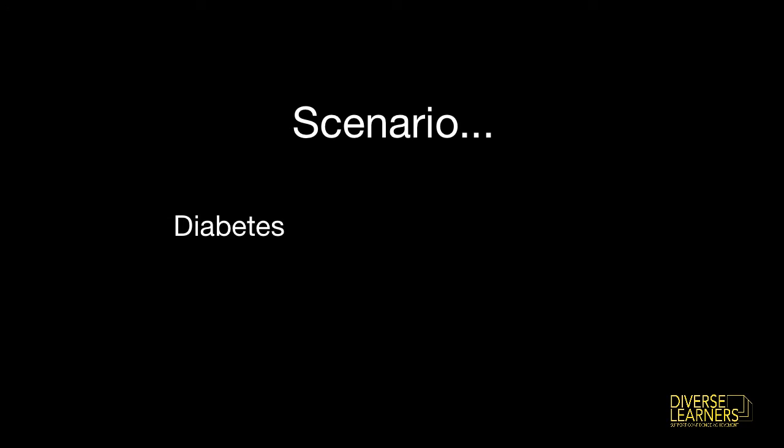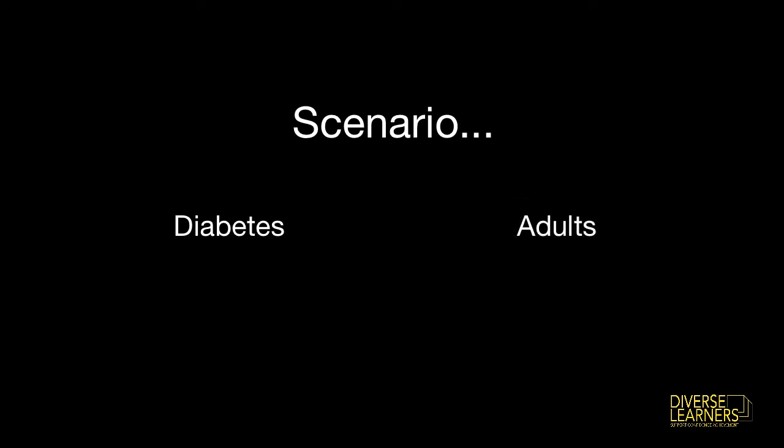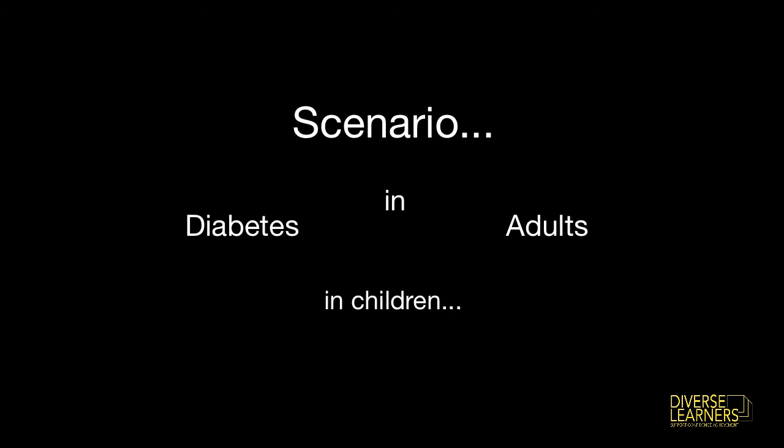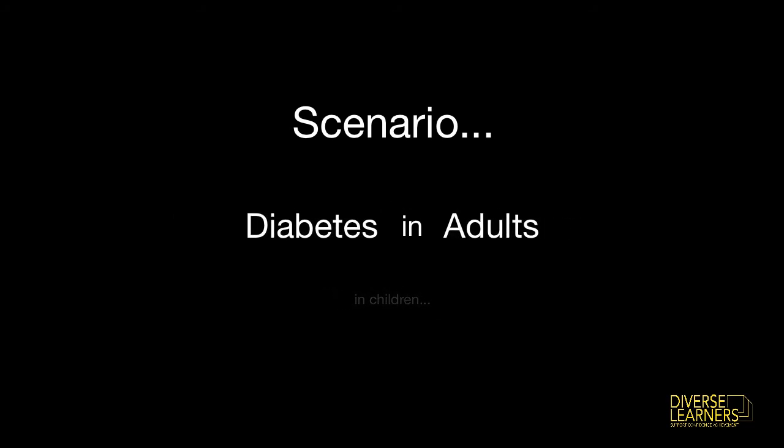To demonstrate how you might use Boolean search terms when searching for evidence and literature, I'm going to use the following scenario. Let's imagine we have a patient in our care who has diabetes, and that patient is an adult. So we'd like to find some general information about diabetes in relation to adults, focusing our search specifically on diabetes related to adults, not children.